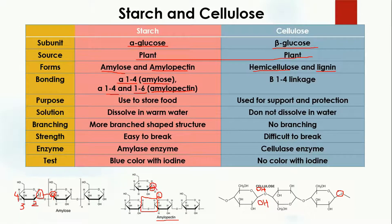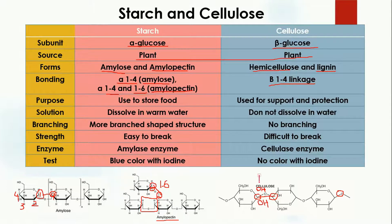In the case of cellulose, we only have beta 1,4 linkage. This means carbon one and carbon four of the other glucose molecule form the bond, and this is the 1,4 linkage in cellulose.